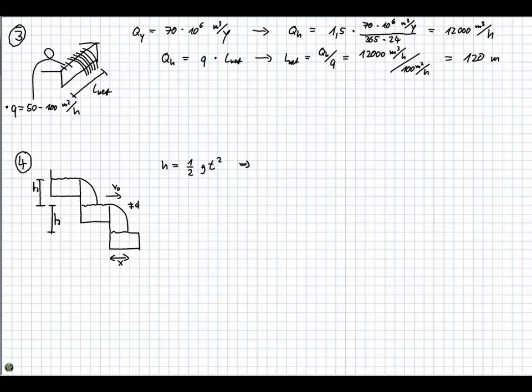Since we are interested in t, we are going to rewrite the formula into t equals square root of 2h divided by g. With h equals the fall height equals 0.5 meters. So this gives us square root of 2 times 0.5 meters divided by 9.81 meters per second squared. And this gives us a time of 0.32 seconds.